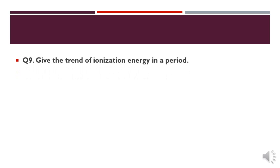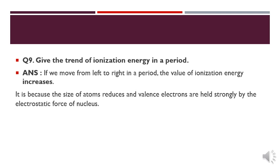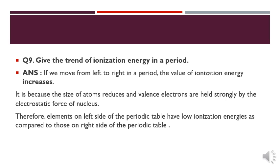Question number 9: give the trends of ionization energy in a period. If we move from left to right in a period, the value of ionization energy increases. This is because the size of the atom is reduced and the valence shell electrons are held more strongly by electrostatic force of attraction due to the increasing nuclear charge.